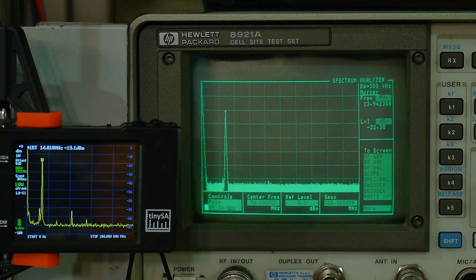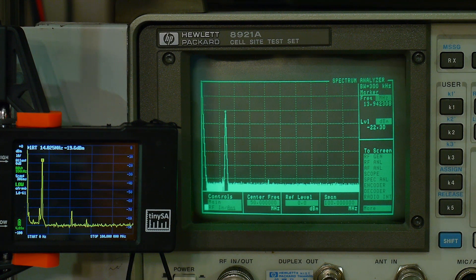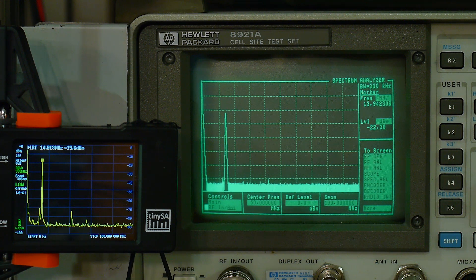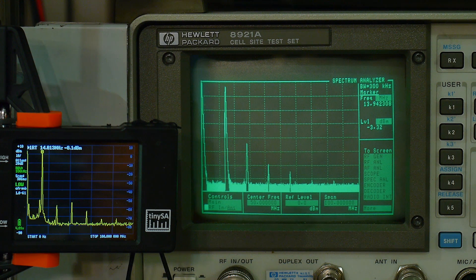It does do well below minus 30 dBm. But anything above minus 30 dBm, you're starting to see harmonics. That's minus 20. Here's minus 10. And here's 0.